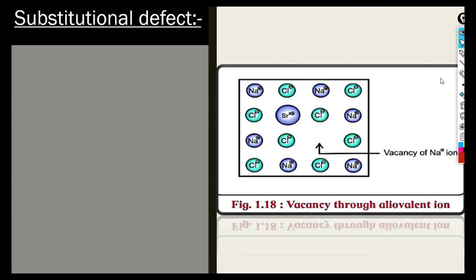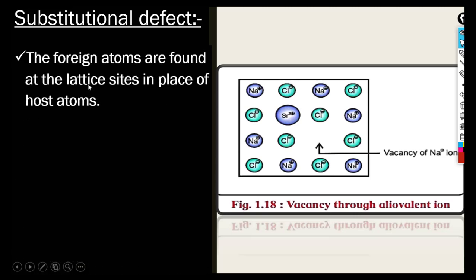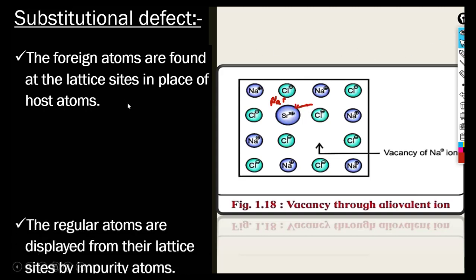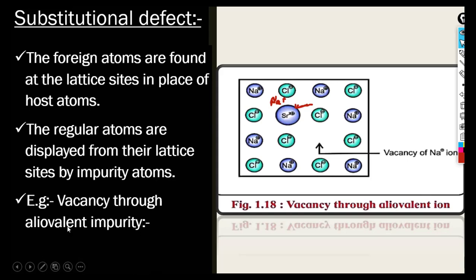Now, here is how to write this in the exam. First point: the foreign atoms are found at the lattice site in place of the host atom — the host atom was Na⁺ and in its place we see Sr²⁺, the foreign atom. Second point: the regular atoms are displaced from their lattice sites by impurity atoms — Na⁺ is displaced by Sr²⁺.